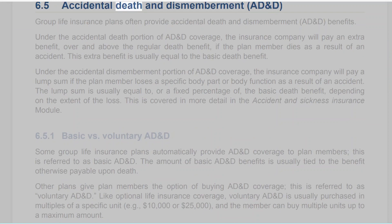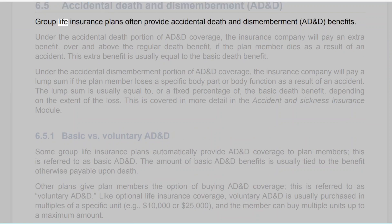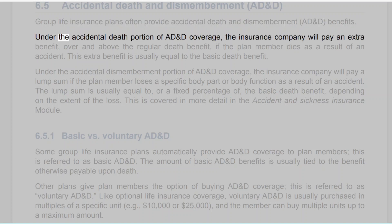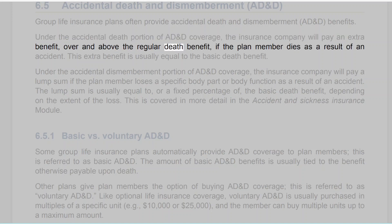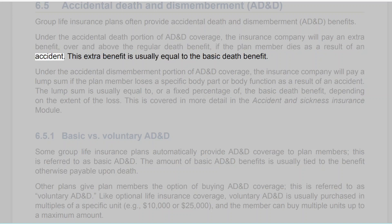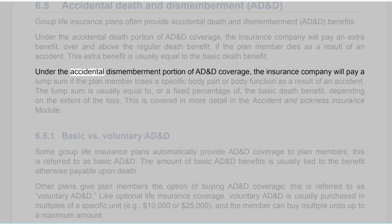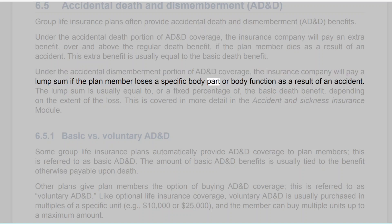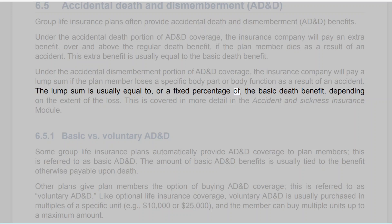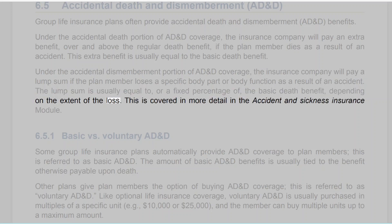6.5 Accidental Death and Dismemberment (AD&D). Group life insurance plans often provide AD&D benefits. Under the accidental death portion, the insurance company will pay an extra benefit over and above the regular death benefit if the plan member dies as a result of an accident — this extra benefit is usually equal to the basic death benefit. Under the accidental dismemberment portion, the insurance company will pay a lump sum if the plan member loses a specific body part or body function as a result of an accident. The lump sum is usually equal to, or a fixed percentage of, the basic death benefit depending on the extent of the loss.